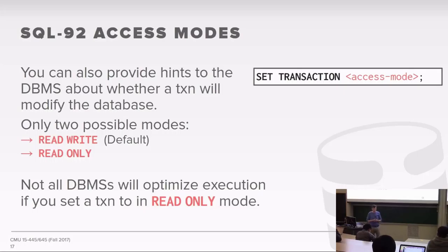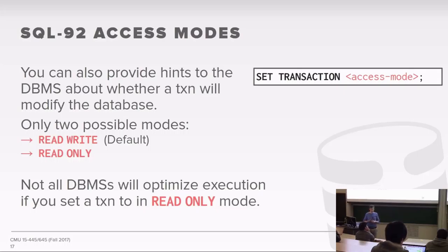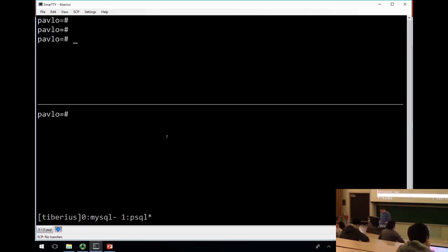You can also hint to the database system whether your transaction is read-only. When starting a transaction you can set the access mode to read-write or read-only using SET TRANSACTION. If you're read-only, the database can apply optimizations—for example, it doesn't have to check whether you wrote anything, and it can take a consistent snapshot and run with that. Not all systems will actually apply optimizations based on this hint; it depends on the implementation.